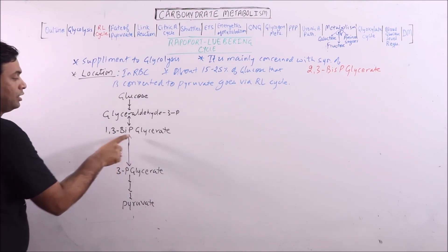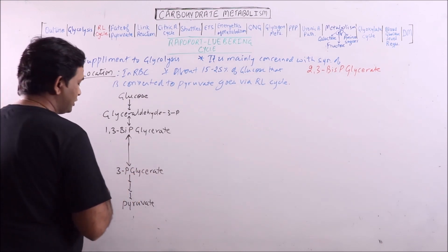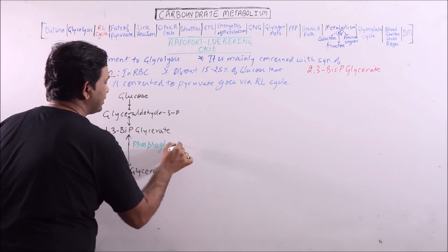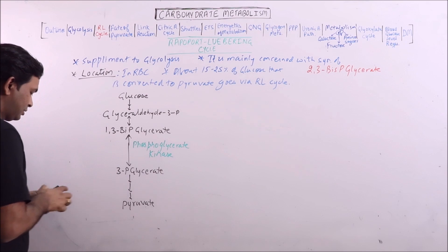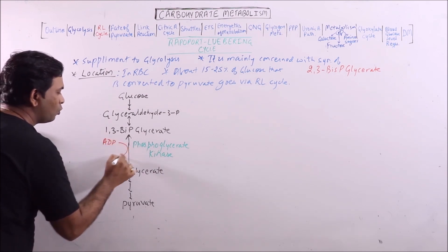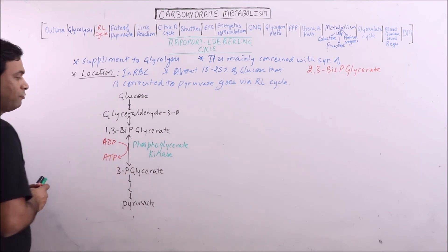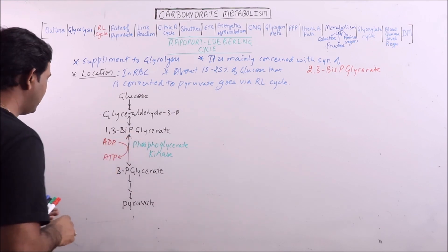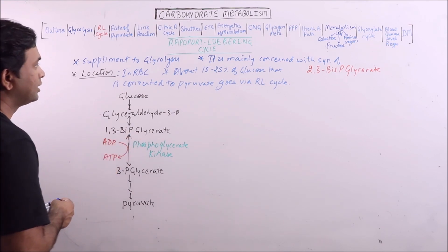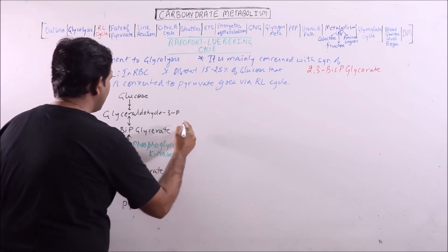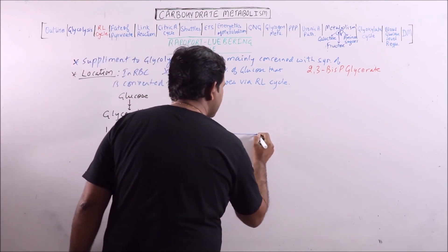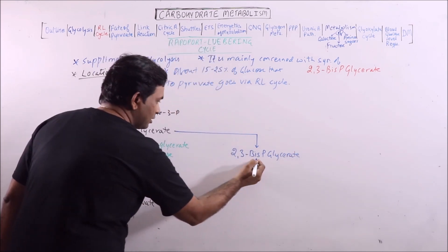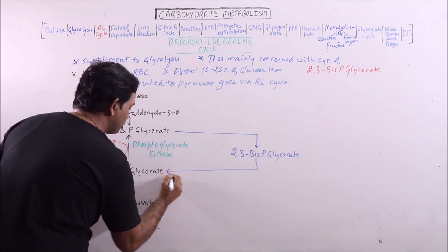This step in which 1,3-bis-phosphoglycerate is converted to 3-phosphoglycerate is mediated by. But here will be the shunt to 1,3-bis-phosphoglycerate in Rapaport-Lubring cycle. In Rapaport-Lubring cycle, 1,3-bis-phosphoglycerate is converted to 2,3-bis-phosphoglycerate. And then it is converted to 3-phosphoglycerate.